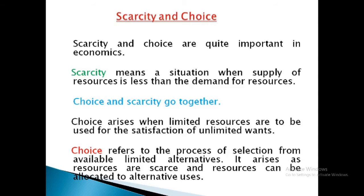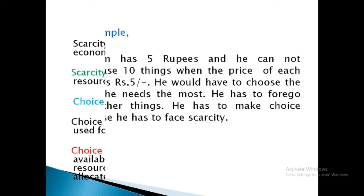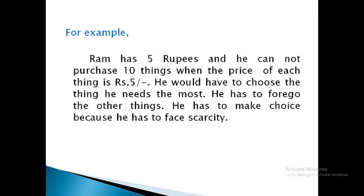Choice arises as resources are scarce and resources can be allocated, that means put to alternative uses. For example, Ram has rupees 5 as pocket money and he cannot purchase 10 things when the price of each thing is rupees 5. He would have to choose the things he needs the most. He has to forego, that is, he has to sacrifice other things. He has to make a choice because he has to face scarcity.